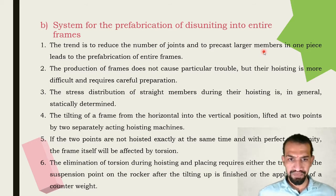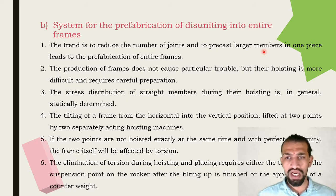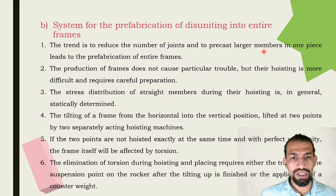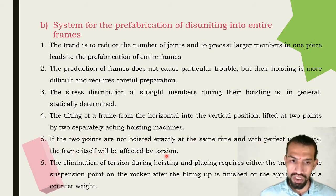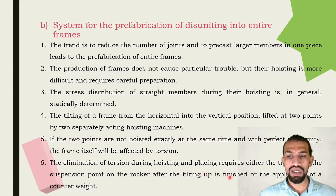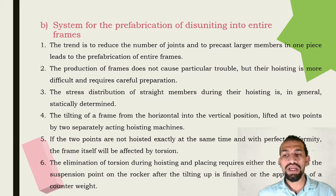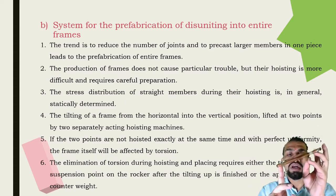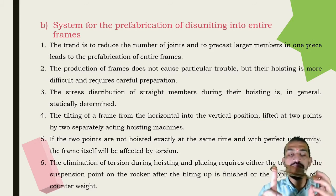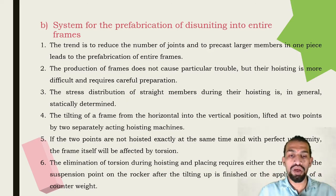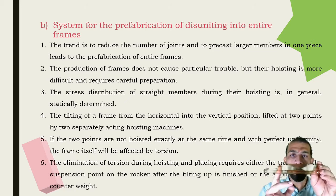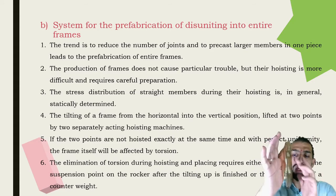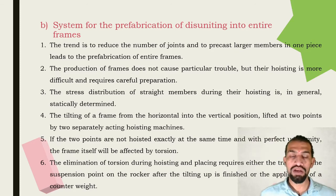The frame is tilted from a horizontal into a vertical position and lifted at any two points by two separately acting hoisting machines. If the two points are not hoisted at exactly the same time and with perfect uniformity, the frame itself will be affected by torsion. The elimination of torsion during hoisting and placing requires either transfer of the suspension point on a rocker after tilting up, or application of a counterweight. The counterweight balances the section to maintain it horizontal or allow it to become vertical.